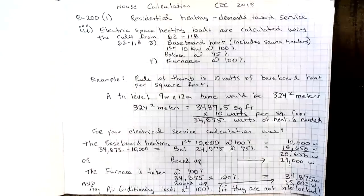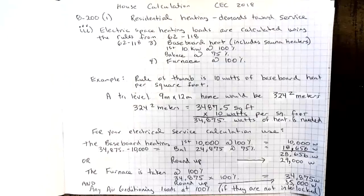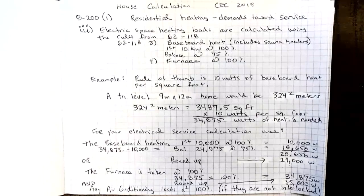In a previous video, I spoke about how many watts baseboard heat we need per square foot. It's generally acceptable that we use 10 watts baseboard heat per square foot. In this example, a tri-level 9 meter by 12 meter home would be 324 square meters. If I convert that, I get 3,487.5 square feet times 10 watts per square foot gives me 34,875 watts that I need.